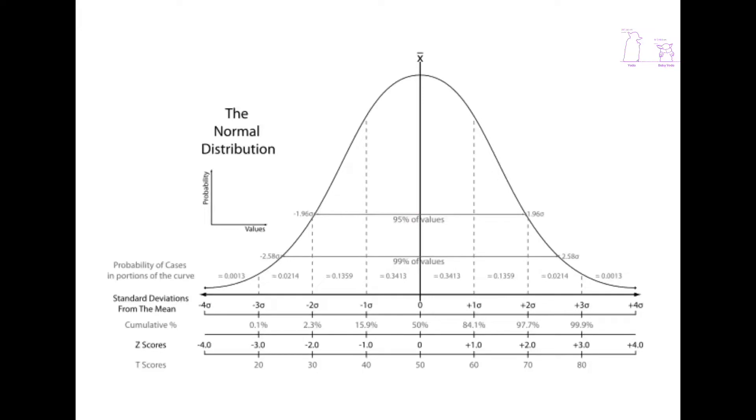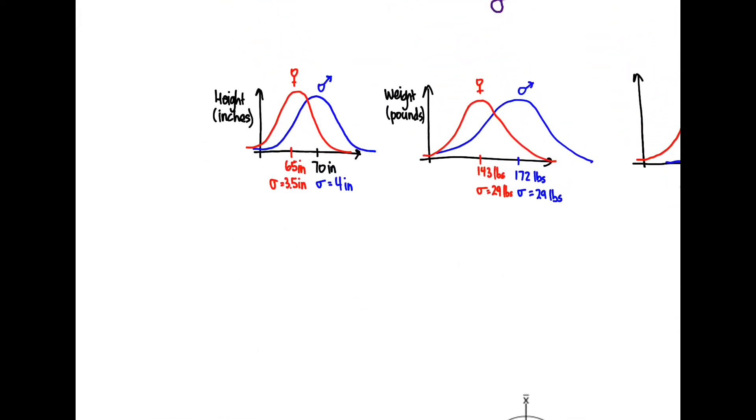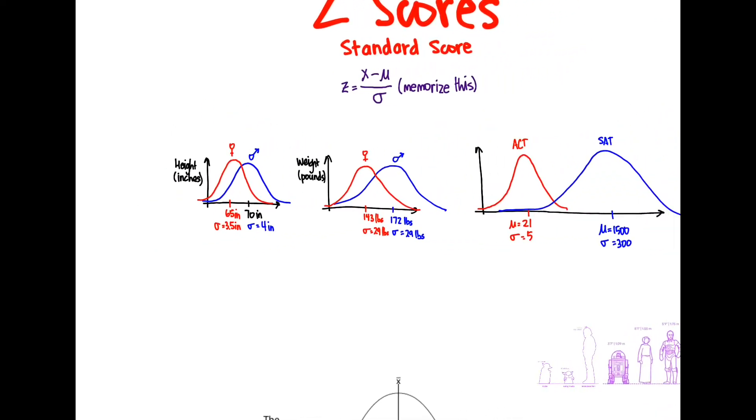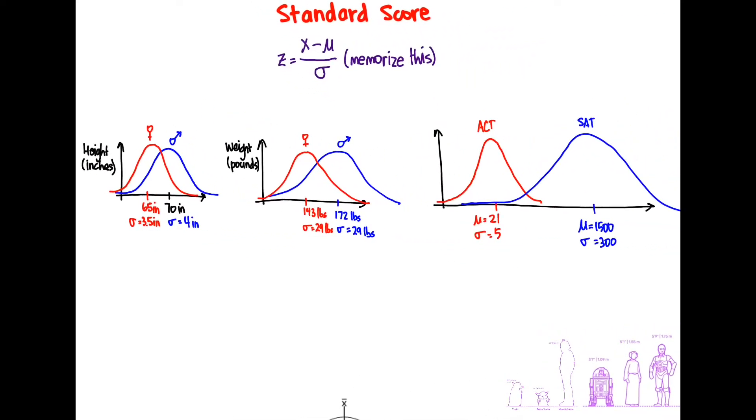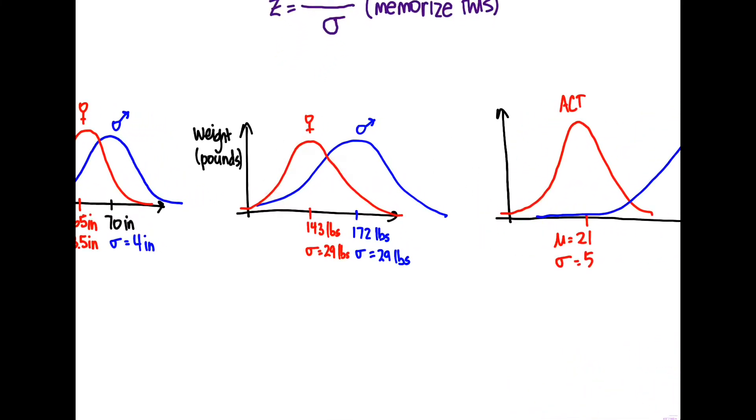But real life data is not always so clean. So let's take a look at some real life data. We got over here height. Okay. So we can see here, here's the height of men and women. And the average height of men is, the mean is 70 inches with a standard deviation of four inches. And for women it is 65 with a standard deviation of 3.5. If we look at weight, it's over here. We got 172 pounds as the mean with 29 pounds as a standard deviation for men. And for women it's 143 pounds with 29 pounds as a standard deviation here.